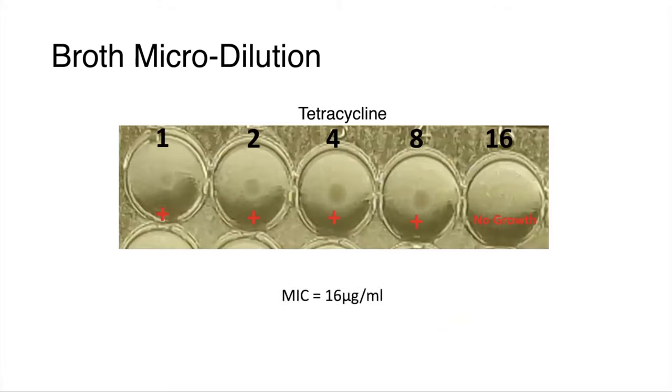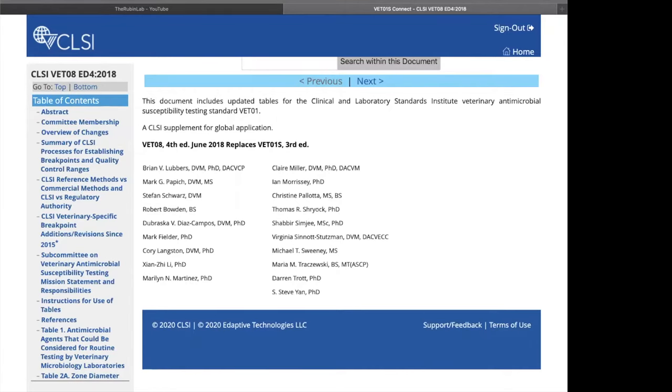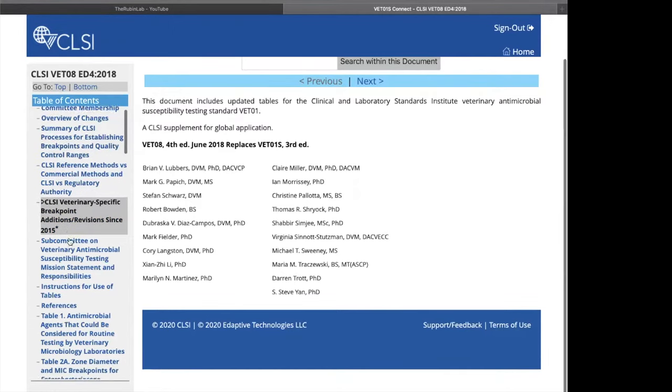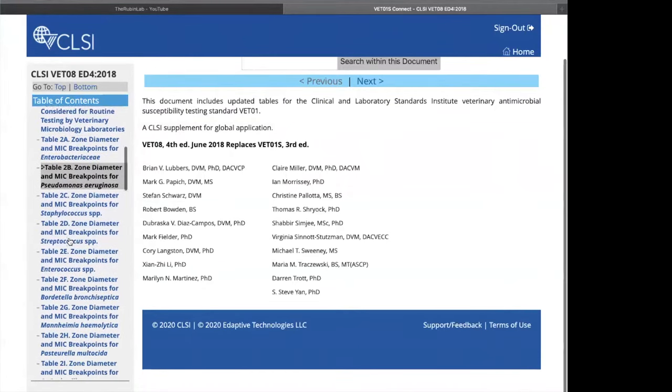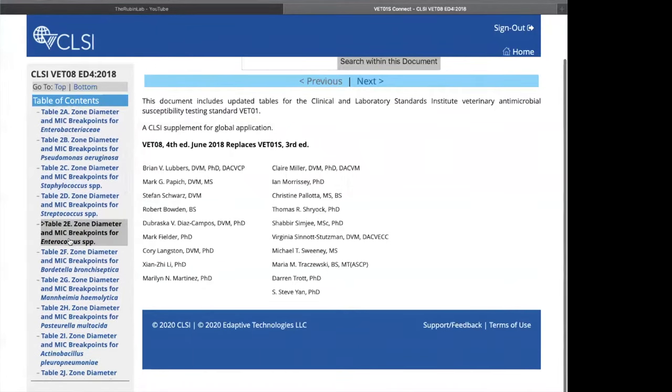These results can then be manually interpreted by comparison with the CLSI guidelines. This is the online version of the CLSI guidelines where we find our interpretive criteria for susceptibility tests, and as you can see over here on the left, we have all of the different organisms we might be interested in listed. This is where we'll find each of our sets of breakpoints.